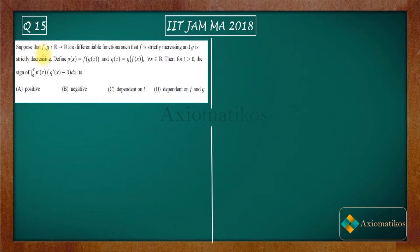Suppose that f, g are differentiable functions on R such that f is strictly increasing and g is strictly decreasing. Define p(x) as composition of f over g and q(x) as composition of g over f. Then for t greater than 0, the sign of this thing will be. So these are your options. Let us start.